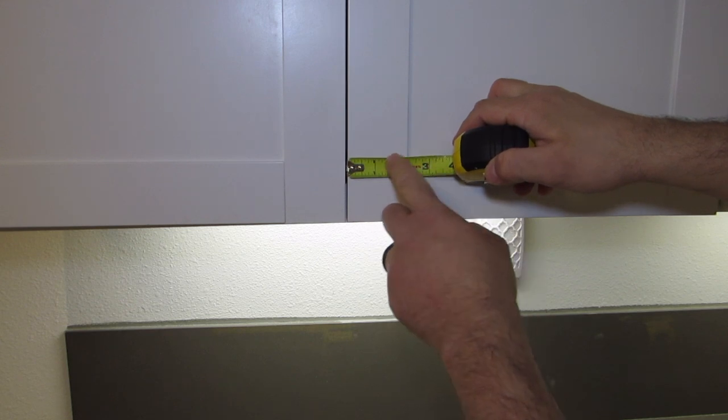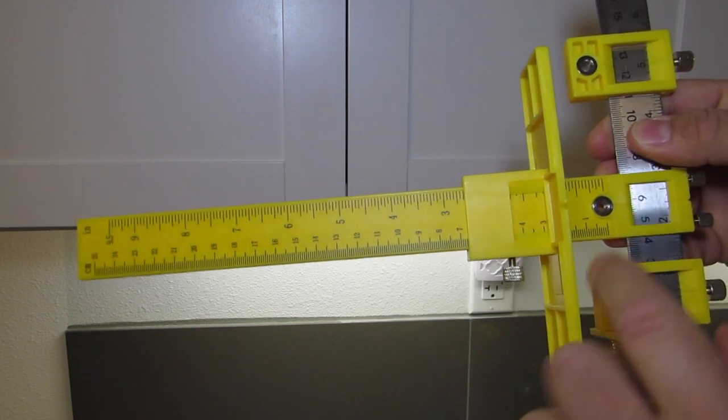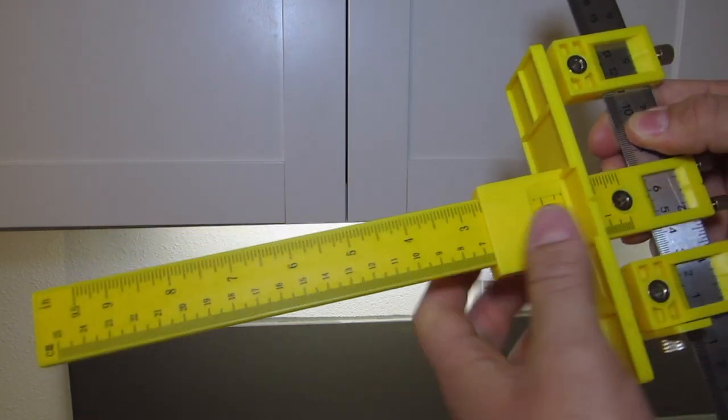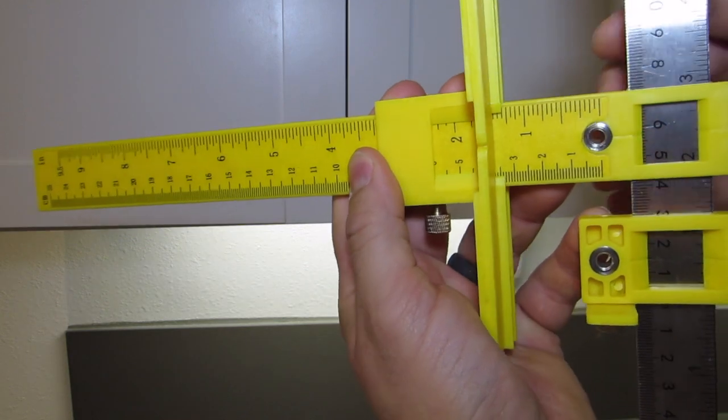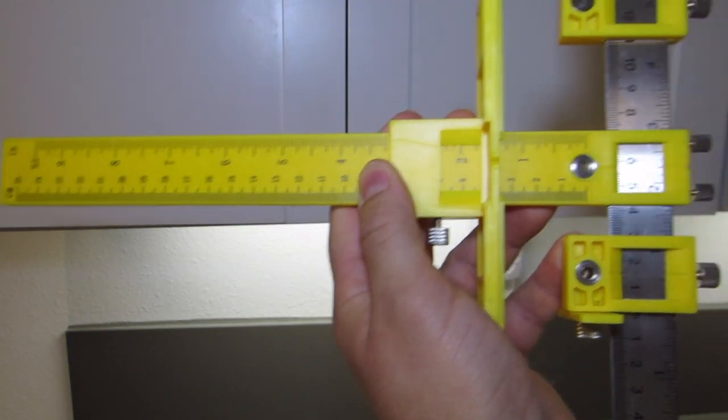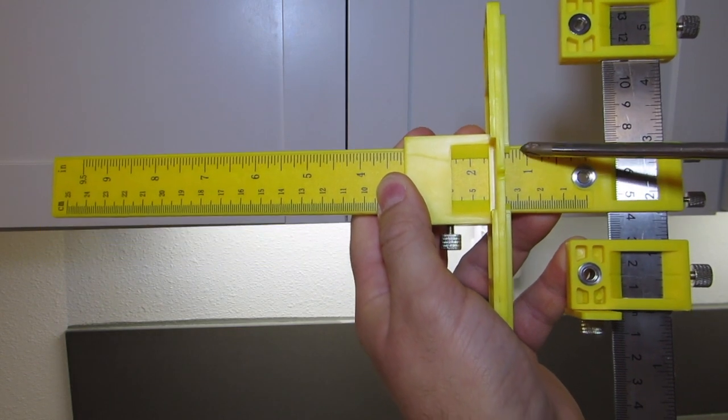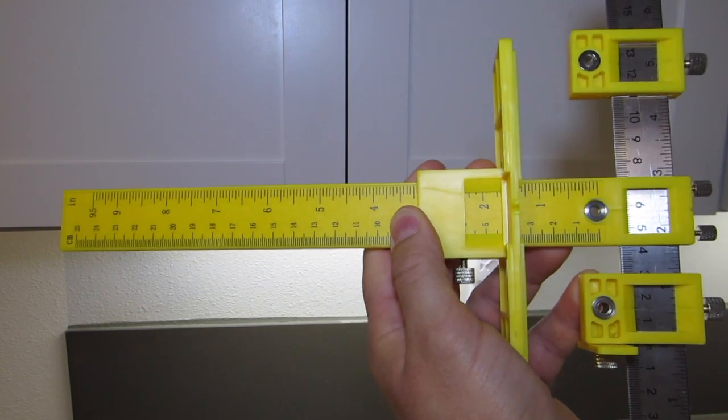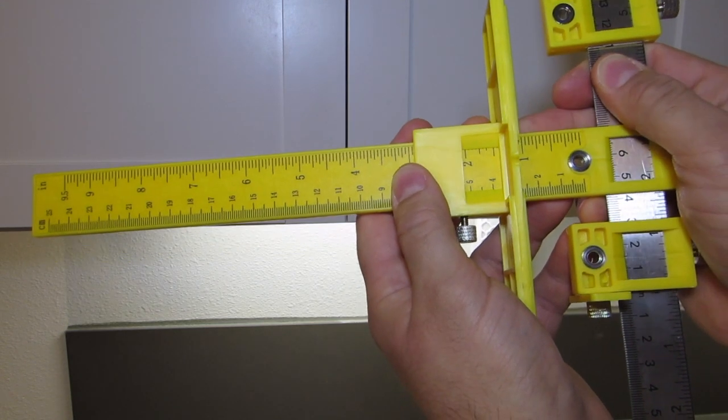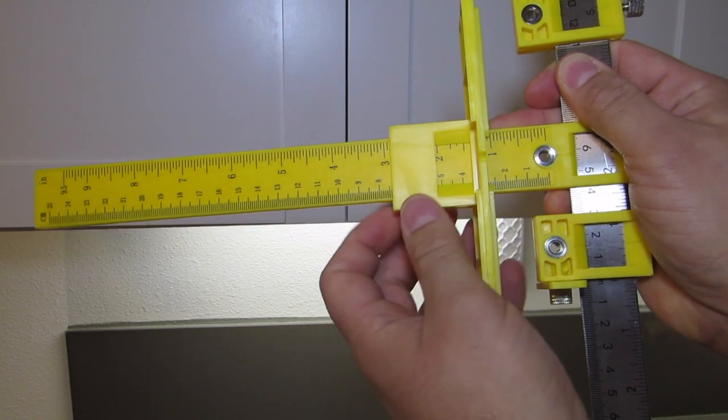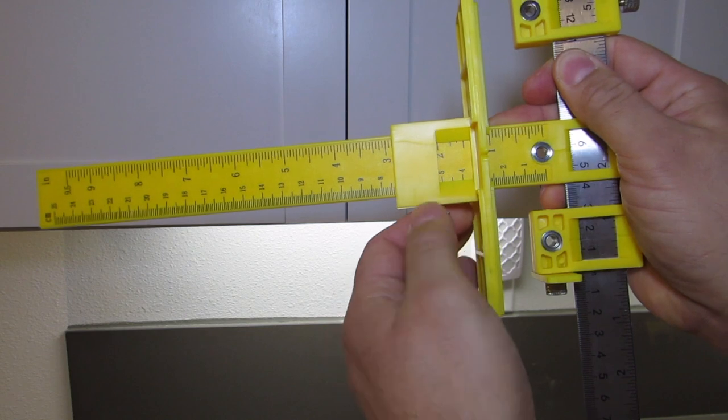And it's the same here. So we said one and one eighth is how far we want it. So because the hole is right here and we're going this way, the way we adjust to one and one eighth, that's going to be the second line from the one inch mark, which is right there. Let's get it right on the line.